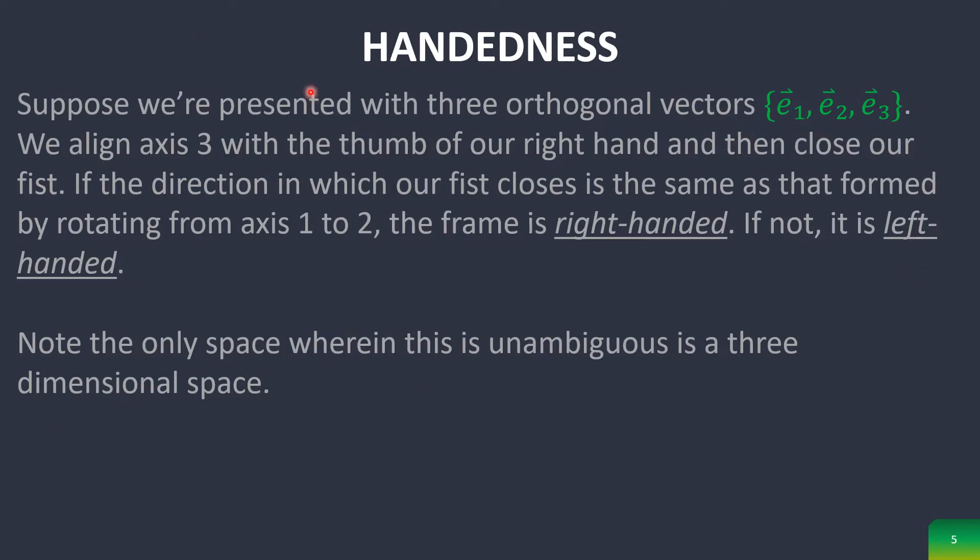Now, before we go into talking about the outer product in the third dimension, we need to introduce handedness. We align axis three with the thumb of our right hand and then close our fist. If you have axis three going up, and then you have the first axis here, and this is axis two. If axis one goes into axis two in the same direction that your hand closes, then it is a right-handed set. If not, it is left-handed. But this is only unambiguous in the third dimension. We don't use the term handedness in any other dimensions, at least if we want it to make sense.